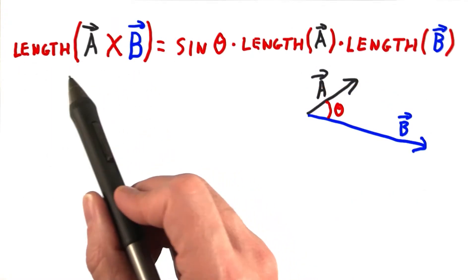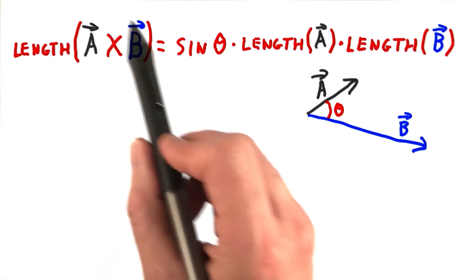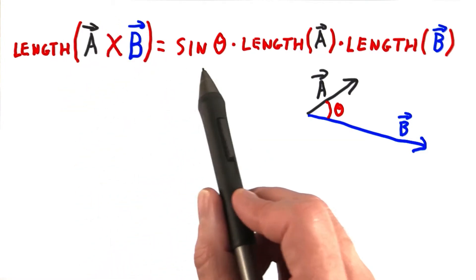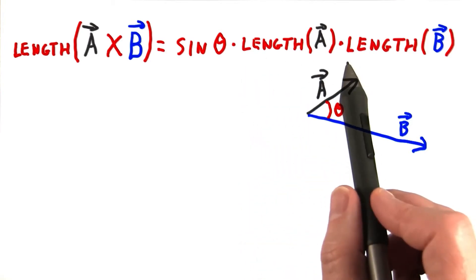The mathematical notation for a cross product is this, a big x. The length of the vector produced by the cross product is equal to the sine of theta, that's the angle between the two vectors, times the length of a, times the length of b.